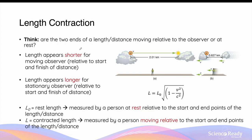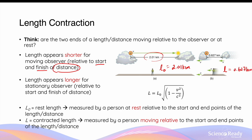In addition to the concept of time, the concept of length or distance also becomes relative. Length or distance will appear to be shorter for a moving observer — that is, when an observer is moving relative to the start and finish of the measured distance. For example, if we are measuring the distance between two clouds, for a stationary observer who is not moving relative to the two clouds, the distance L0 is roughly 2.01 kilometres. When a person is moving relative to the two clouds at velocity v, the distance they measure will become shorter than 2.01 kilometres.